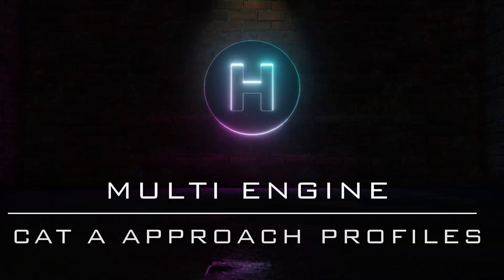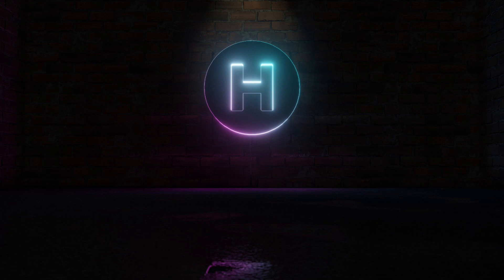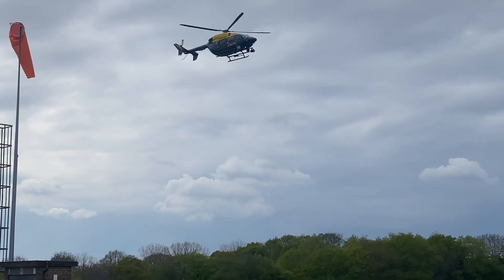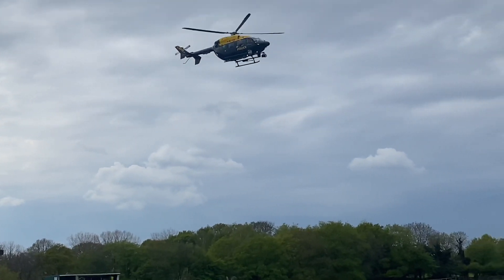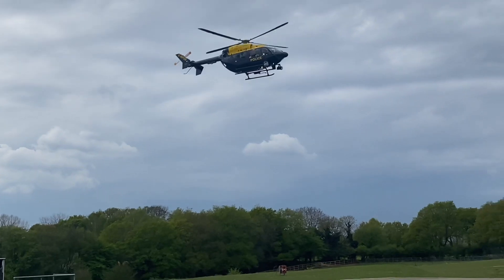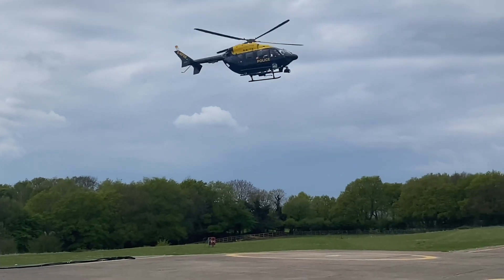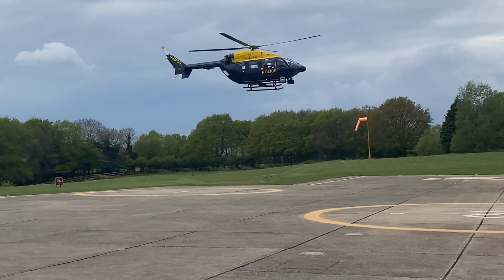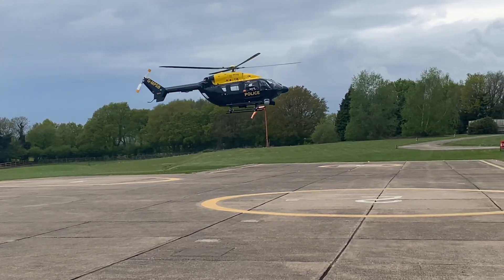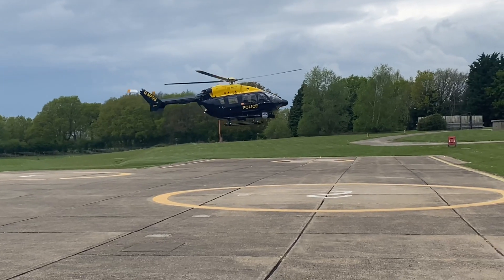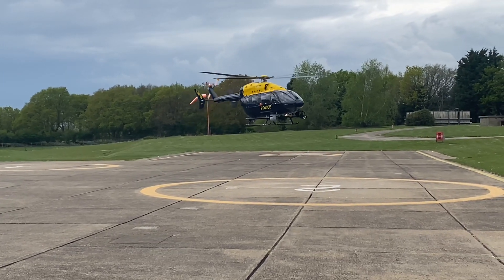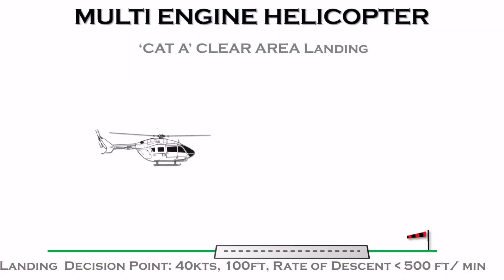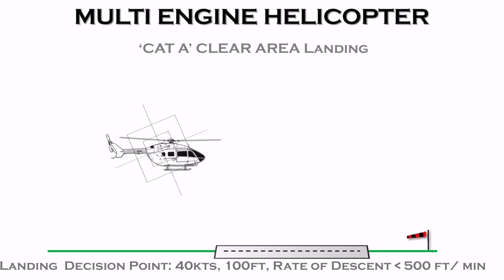We'll now move on to multi-engine CAT-A helicopter operations. For a full description of CAT-A versus CAT-B operations, please watch the start of the video on take-off profiles. In short, when performing a CAT-A approach, a set landing decision point — LDP — is defined in terms of speed and height from the landing point. If the correct profile is flown within the weight, altitude and temperature limits set by the manufacturer, if there is an engine malfunction before this LDP, the pilot can safely abort the landing — known as a balked landing — or continue on the remaining engine to land at the designated area. If there is an engine failure after the LDP, the pilot is committed to landing safely using power from the remaining engine.